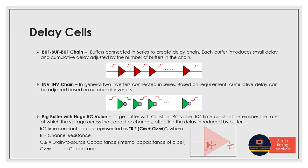So based on how much delay is required, we adjust the number of buffers. And this method is very simple and effective for creating controlled delays. So this method basically we use whenever less magnitude of hold violations are there, that time only we go for this kind of delay cells.